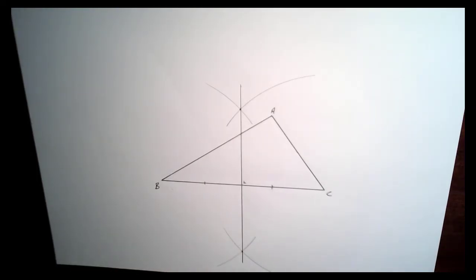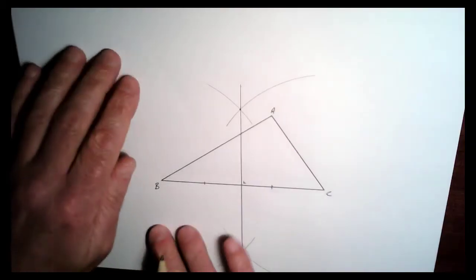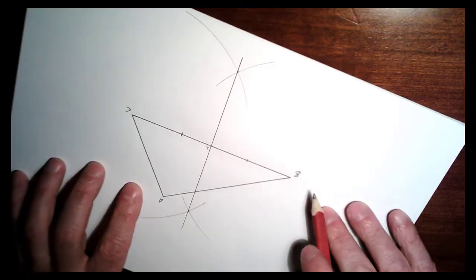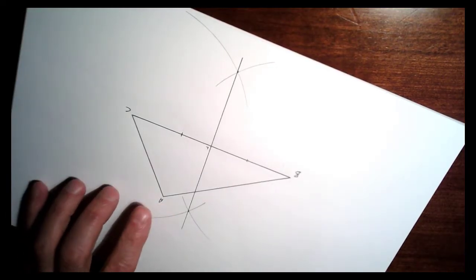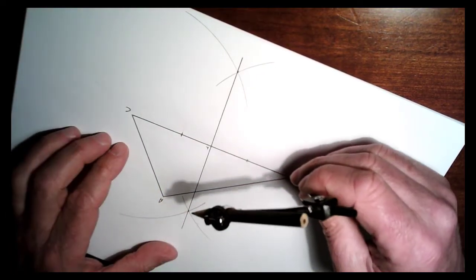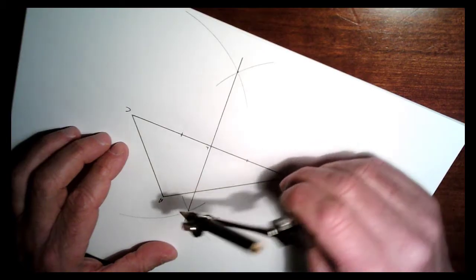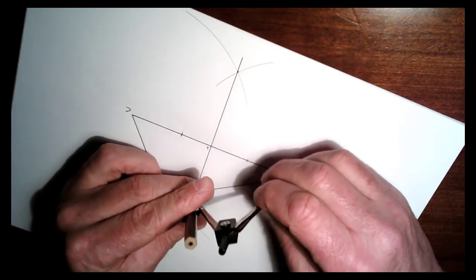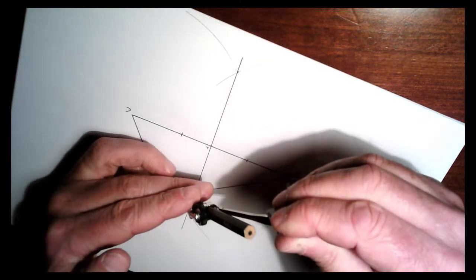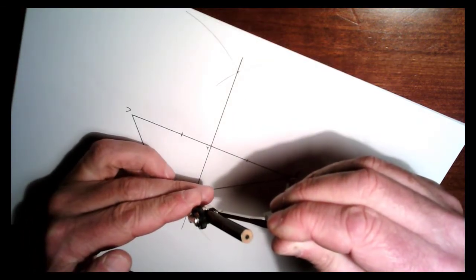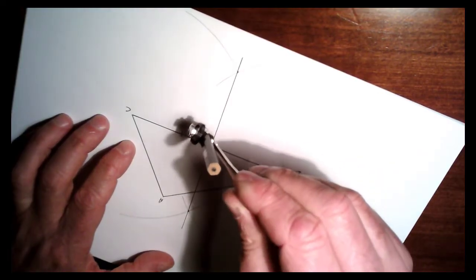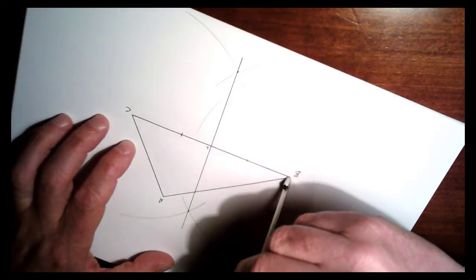Okay, so next thing we've got to do is do all that again but on another side. So I'm going to pick AB. I'm going to do the same thing again. So again we get our compass, put the compass at B, bring the pencil more than halfway out. And what we're going to do is draw an arc up here, another arc down here.